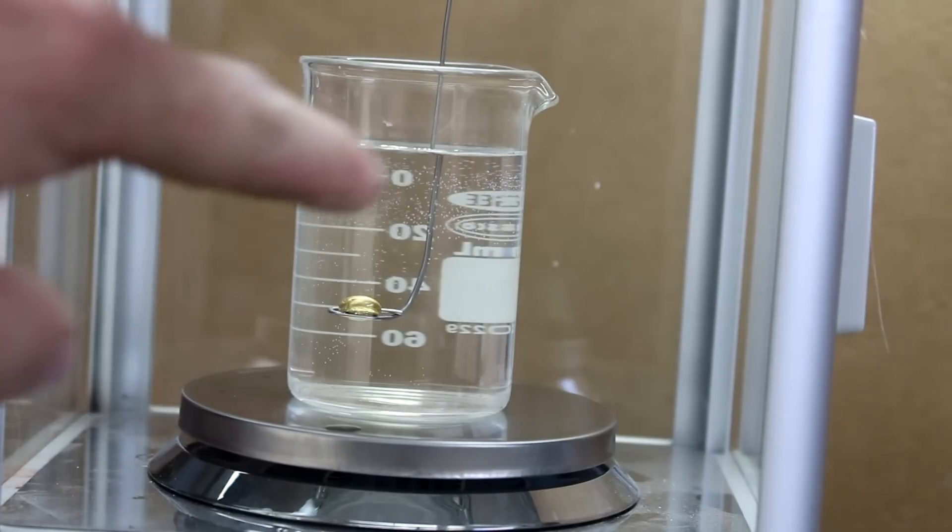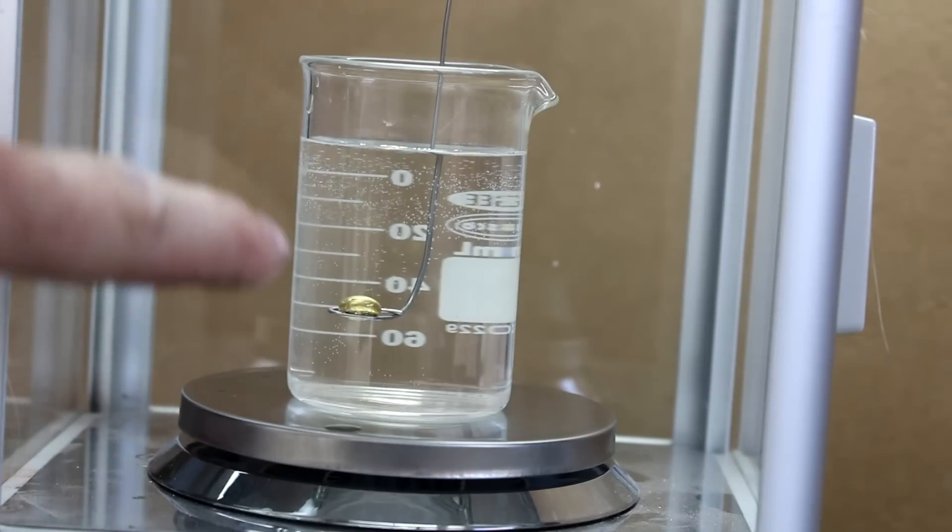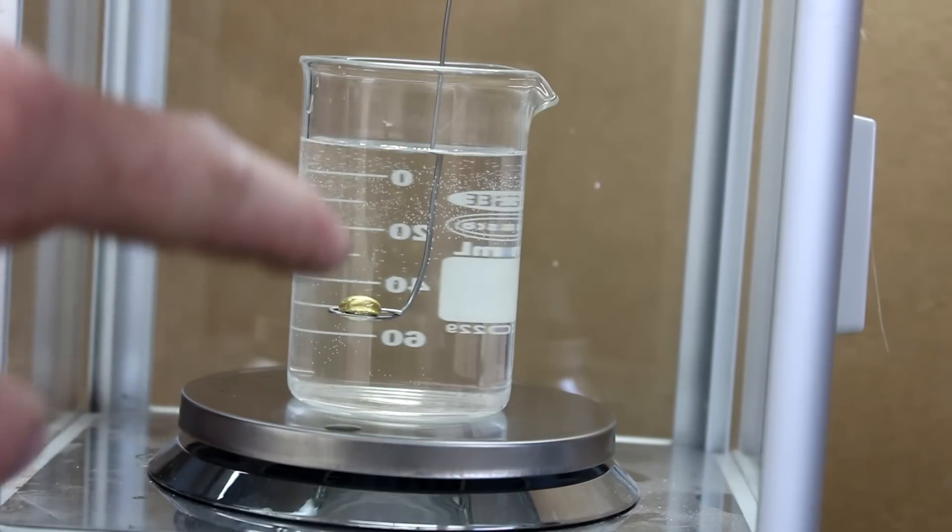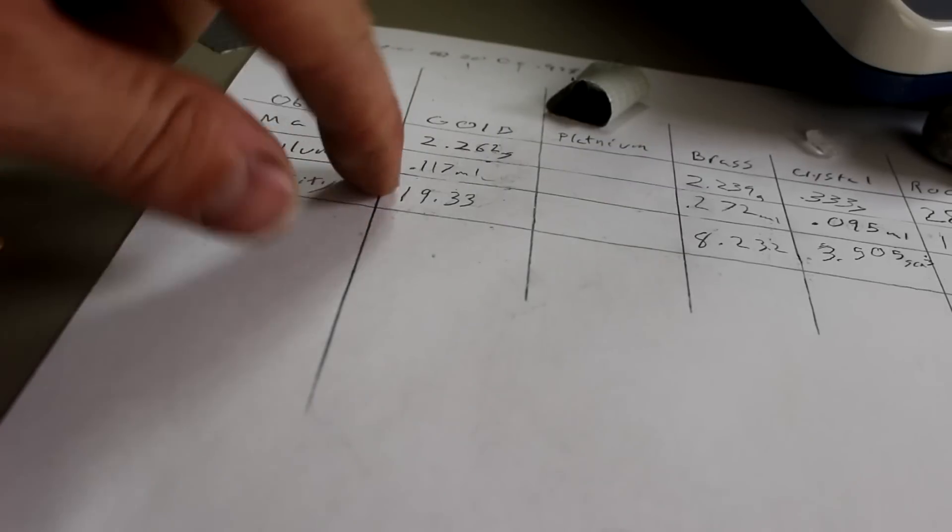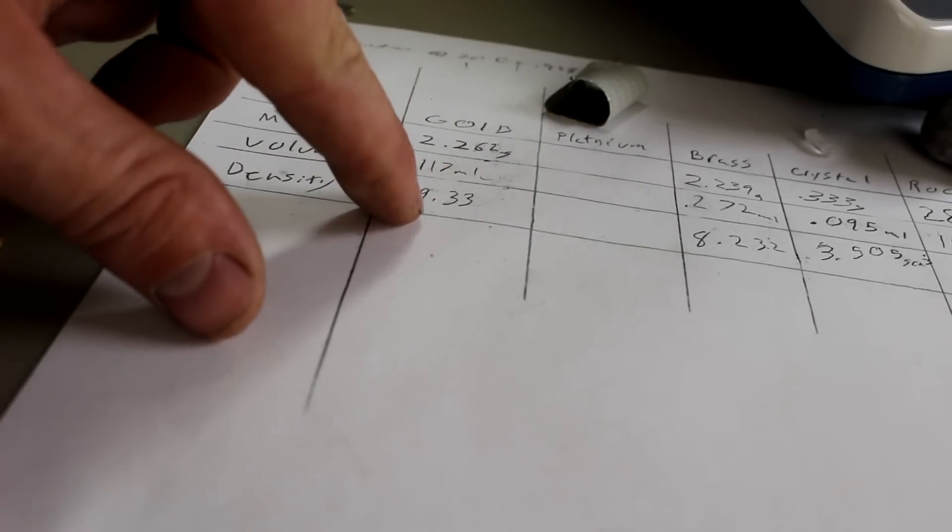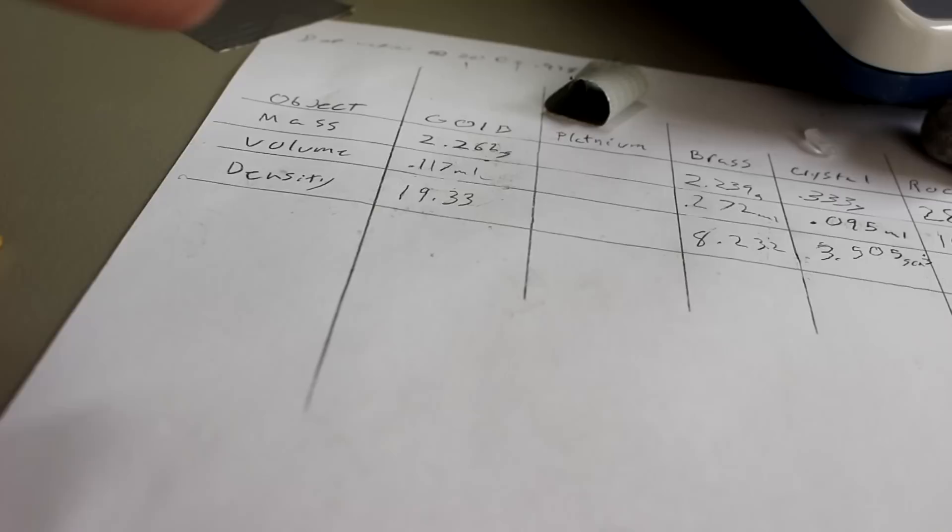The beauty about using this method is it doesn't actually matter if there's bubbles on the side of the glass or if there's a little bit of water up top or even if there's a little bit of water on the plate. As long as the amount of water doesn't actually change then it's all valid. So doing the math on these numbers I come up with 19.33 for the gold and 8.23 for the brass. The brass is less than half as much as the gold is.